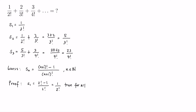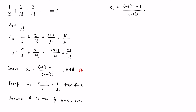Let's name this equation 'equation star,' and then let's assume that star is true for n equals k. That is, S of k is equal to (k+1) factorial minus 1, all over (k+1) factorial.